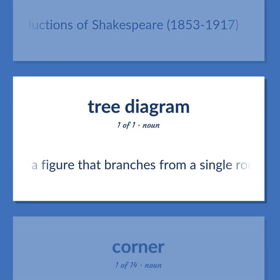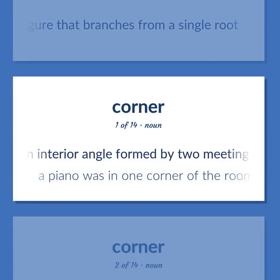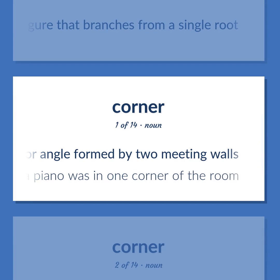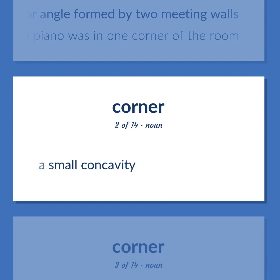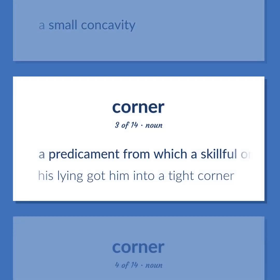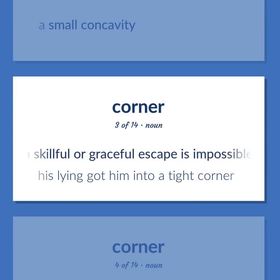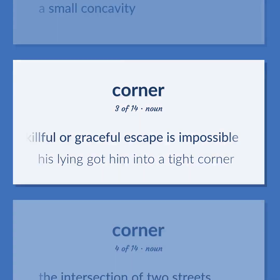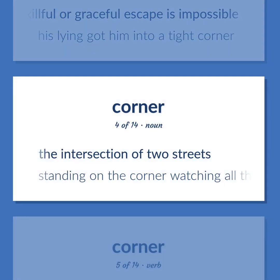A figure that branches from a single root. An interior angle formed by two meeting walls. A piano was in one corner of the room. A small concavity. A predicament from which a skillful or graceful escape is impossible. His lying got him into a tight corner. The intersection of two streets. Standing on the corner watching all the girls go by.